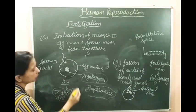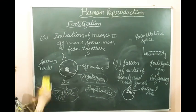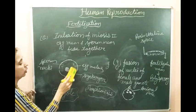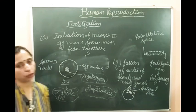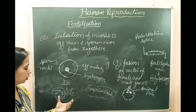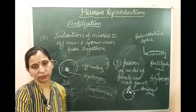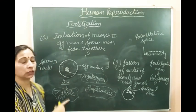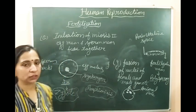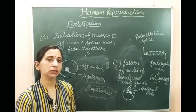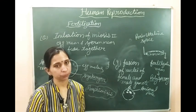This diploid structure is now called the zygote. The zygote has two sets of chromosomes, half from the father and half from the mother. This zygote later moves toward the uterus, as fertilization occurs in the ampulla part of the fallopian tube, or at the ampullary-isthmus junction as already discussed. After that, the zygote moves from the fallopian tube to the uterus for the implantation process.